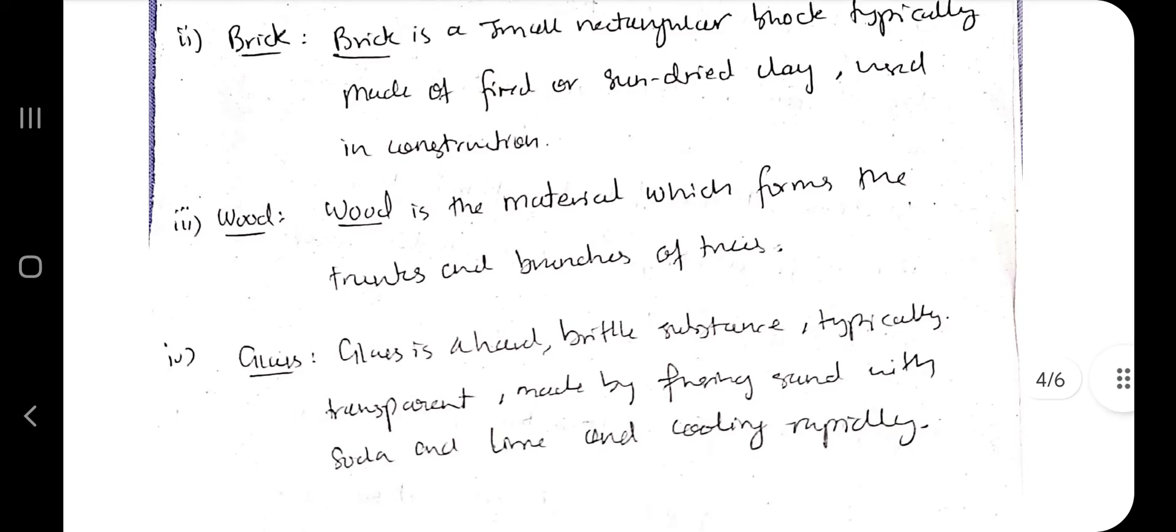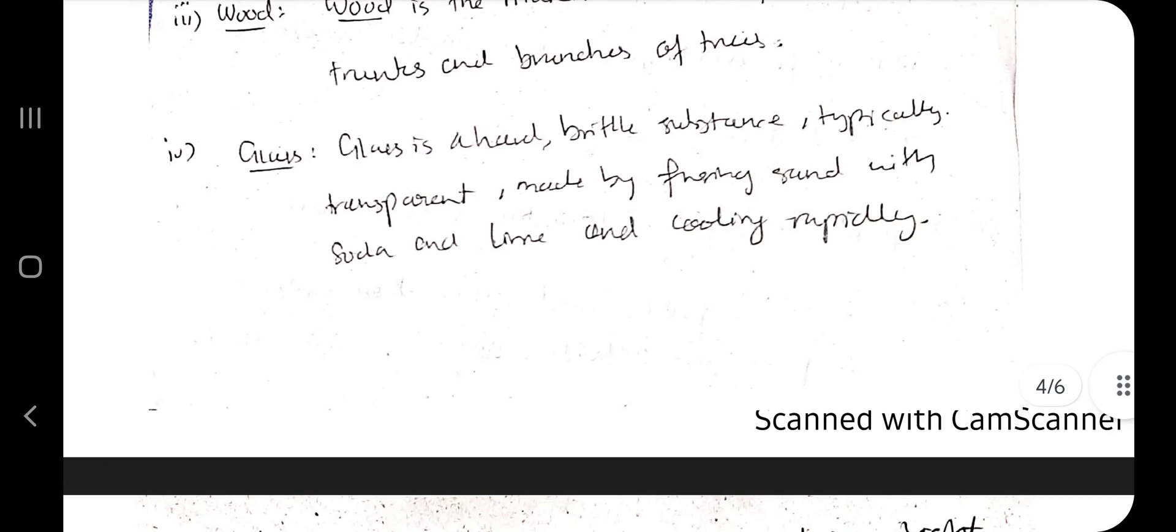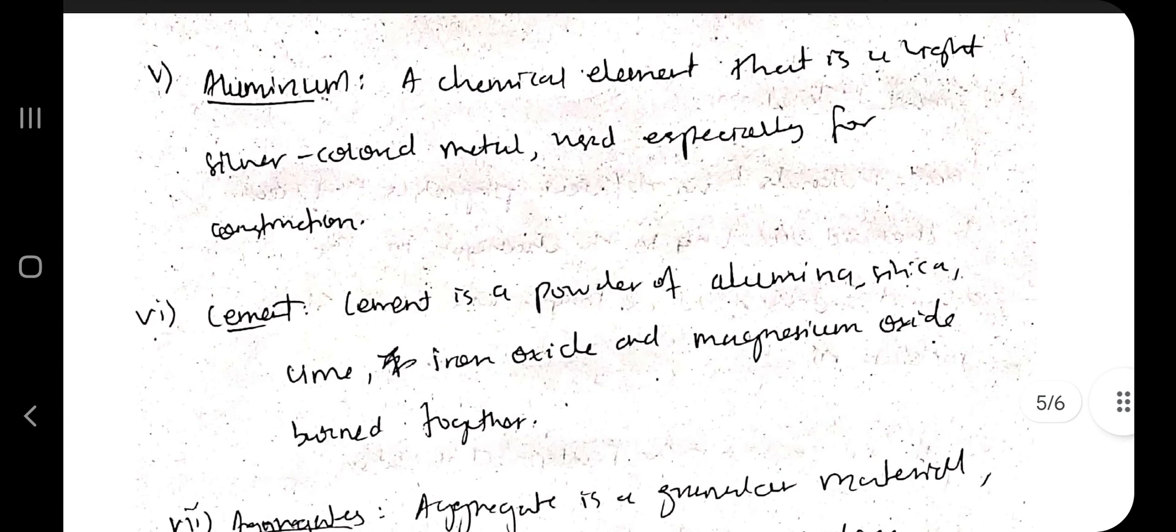Wood is material used from trunks and branches of trees. Glass is a hard, brittle substance, typically transparent, made by fusing sand with soda and lime and cooling rapidly. Aluminum is a chemical element, a silver-colored metal used especially for construction.